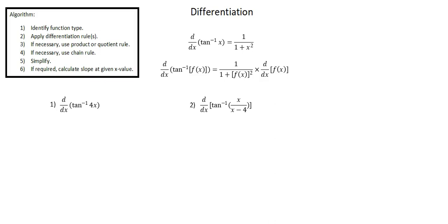If the argument of the inverse tangent function is a function itself then we need to apply the chain rule. That is our second rule given.